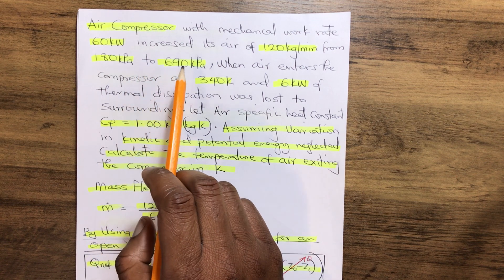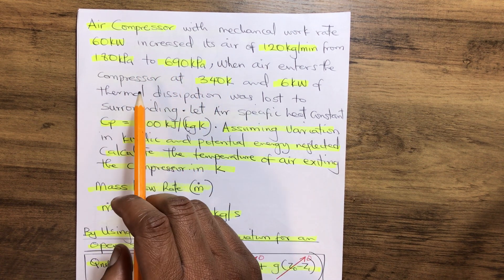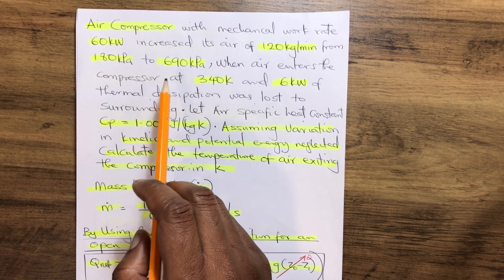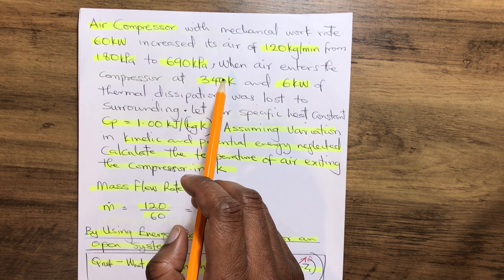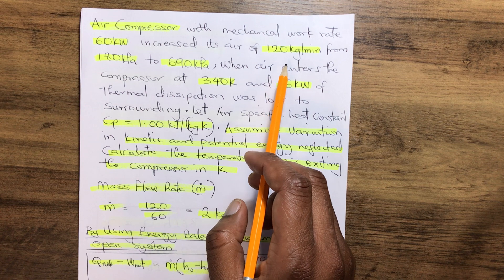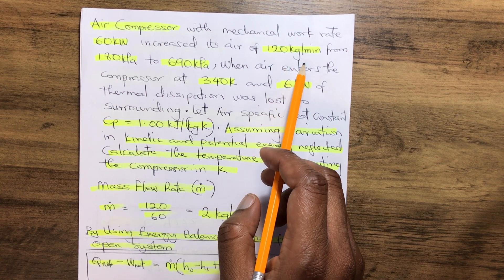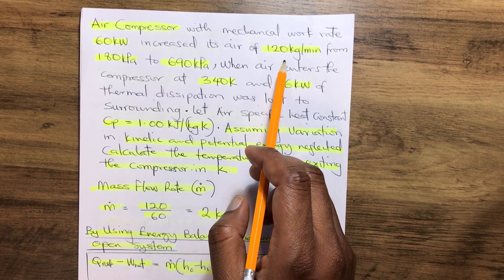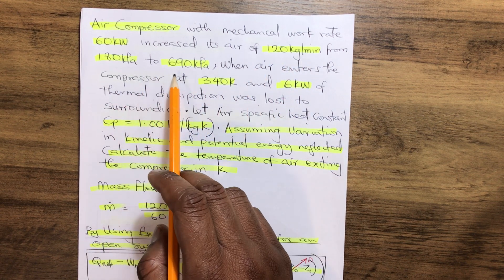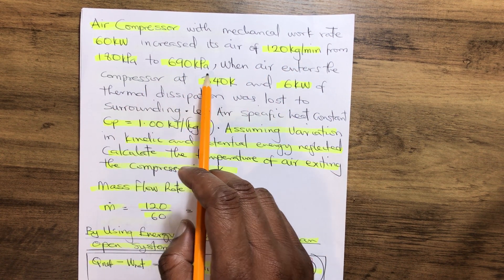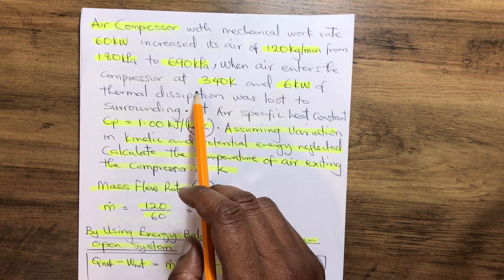An air compressor with a mechanical work rate of 60 kilowatts increases air pressure of 120 kilograms per meter per minute, that's a mass flow rate, from 180 kilopascals to 690 kilopascals when the air enters the compressor.